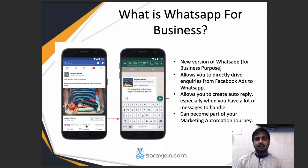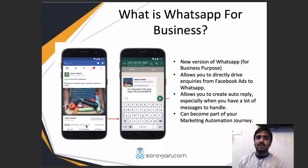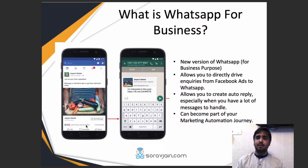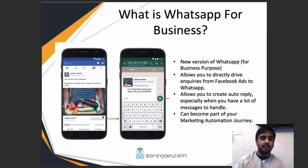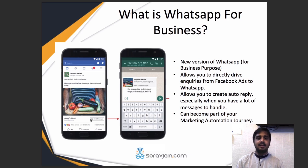They can actually make use of WhatsApp for Business and try immediate conversions. So what is WhatsApp for Business? It's a new version of WhatsApp — a separate app you have to download. It allows you to directly drive inquiries from Facebook ads to WhatsApp. If you remember in December 2017, there was a feature announced where people can send you messages directly by clicking on your Facebook advertisement. When they click the message feature, they can directly message you on WhatsApp. You can see that feature right here — it's a send message button with the WhatsApp logo, indicating people can directly WhatsApp you instead of messaging on Messenger. Currently this particular call-to-action button is not available for everyone.